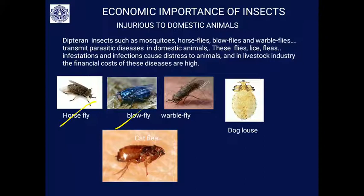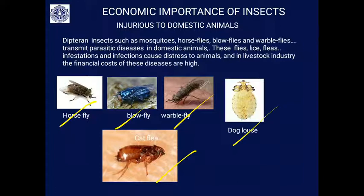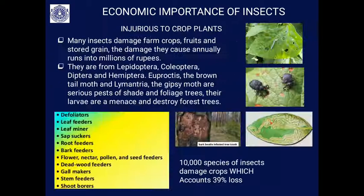Insects injurious to domestic animals include horsefly, blowfly, warble fly, dog louse, and cat flea. Many dipterian insects — mosquitoes and other flies, lice, and fleas — cause distress in domestic animals and livestock through infestations and infections, resulting in great financial loss to animal husbandry.